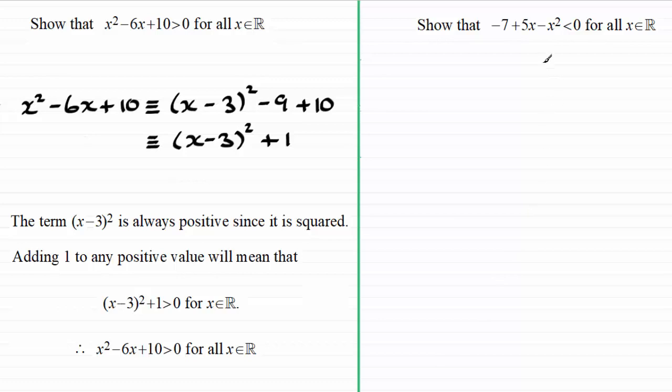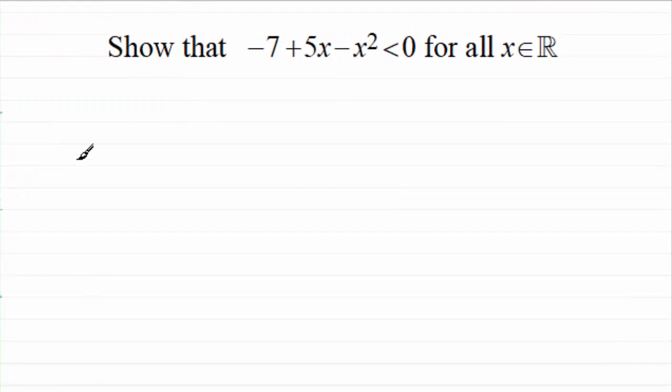Now in the second example here we've got to show that -7 + 5x - x² is less than zero, negative in other words, for all real values of x.